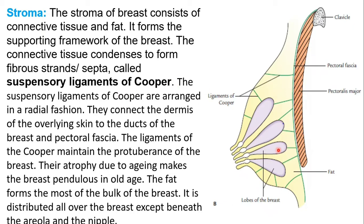The suspensory ligaments of Cooper run in radial directions. These are the glands, and these are the lactiferous ducts. The suspensory ligaments connect the dermis of the overlying skin to the clavipectoral fascia of the breast and maintain the protuberance of the breast. When age increases, these connective tissues become lax and the breast becomes pendulous in old age.